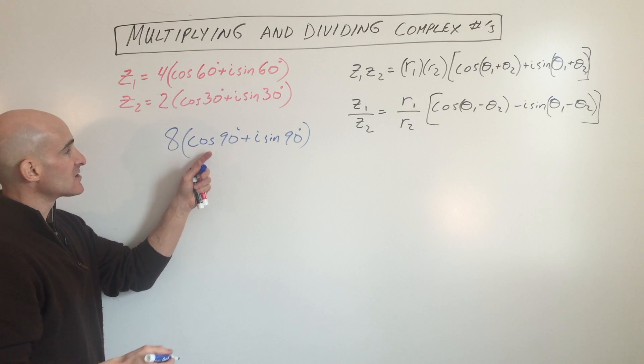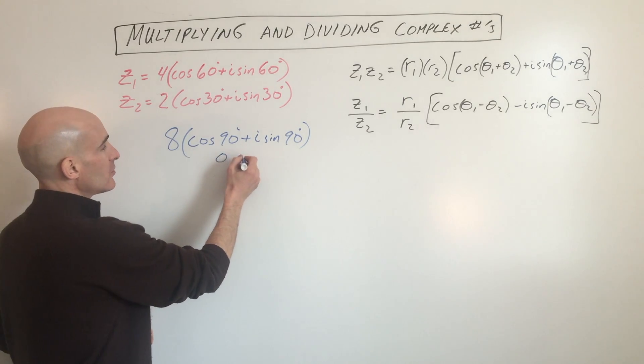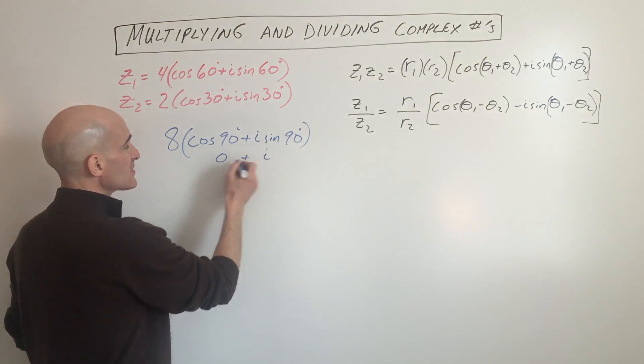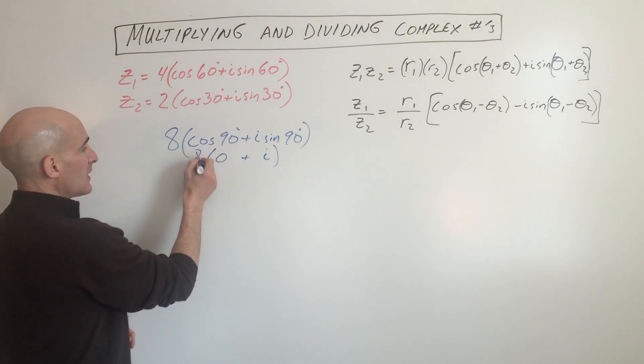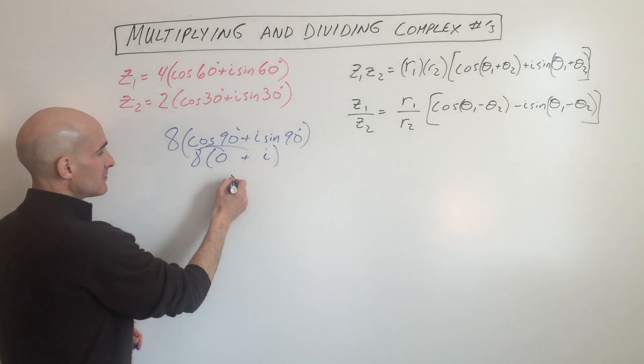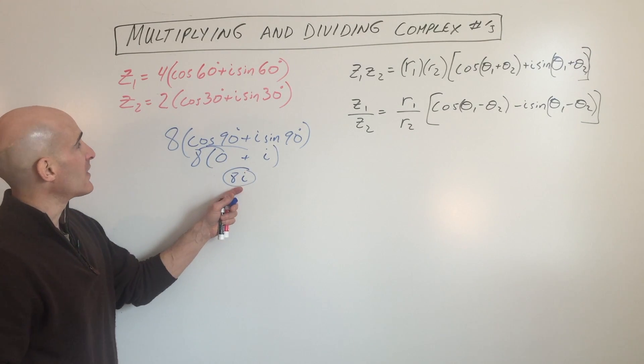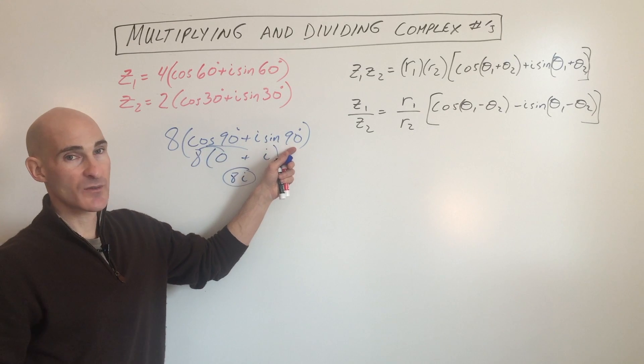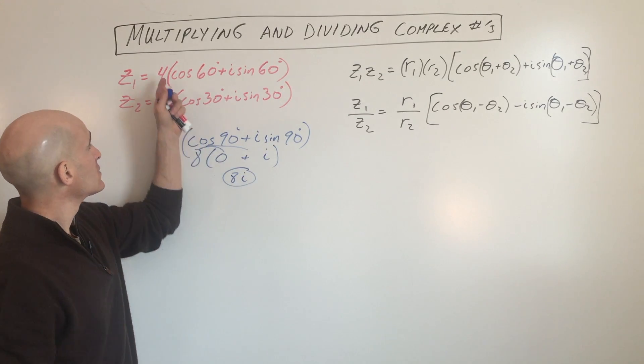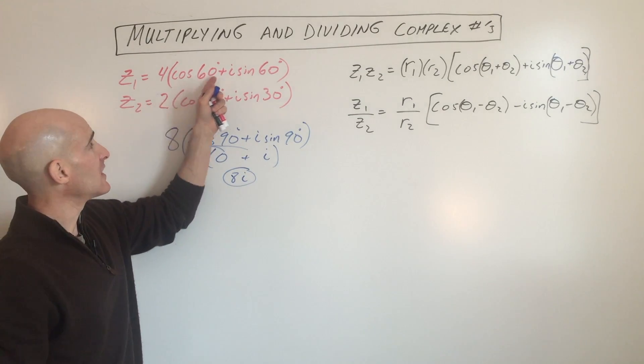Now if you want to simplify this, cosine of 90 is zero, sine of 90 is one, so that's just going to give you i. And if you distribute this eight, you get eight times zero is zero, so you just get eight i. So that's how you can switch back from the trigonometric form back to the standard form. So all we do is multiply the r values and add the angles.